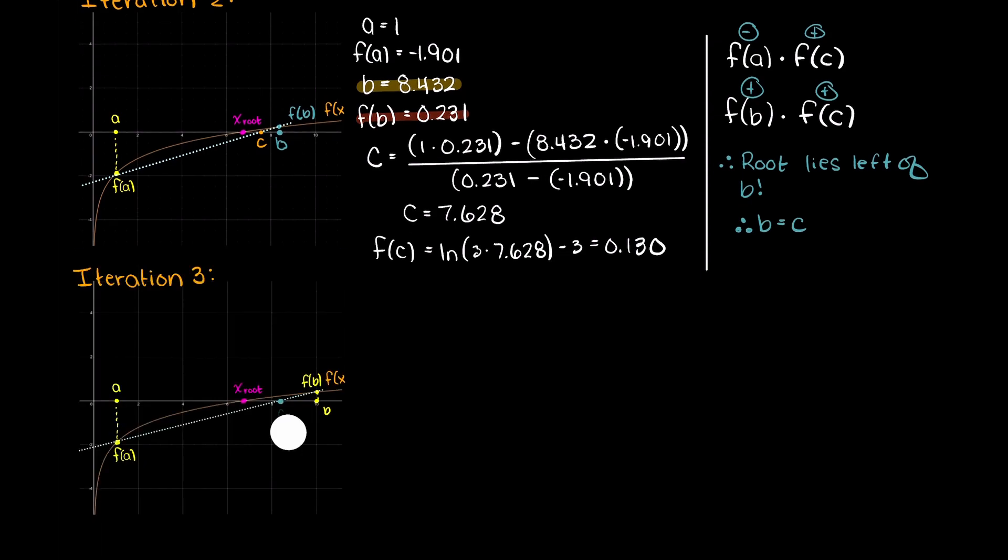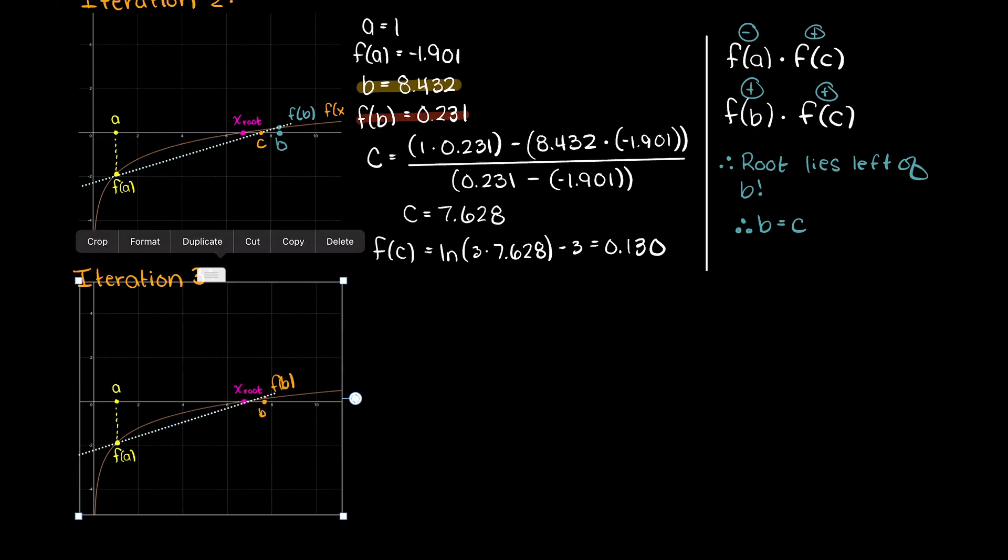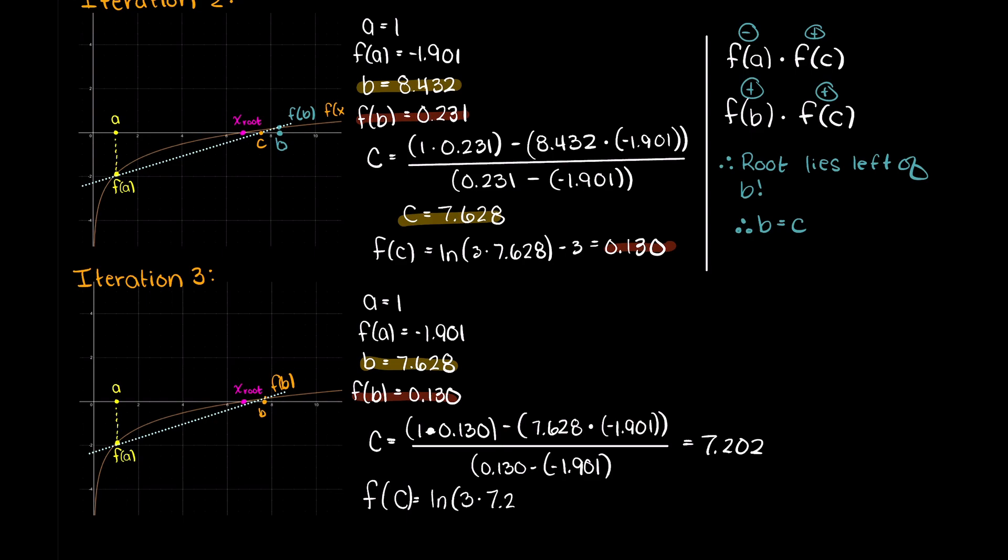Lastly, for our third and final iteration, we will continue again with our algorithm. Our a values will remain untouched and this iteration's b values are just our past c values. Now, solving for our new c, we get 7.202 which into our function equals 0.073, which again will push our upper root boundary b to the left.